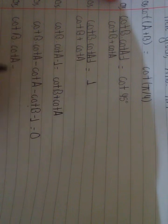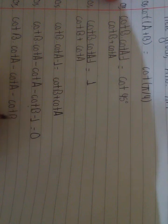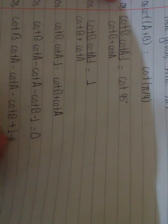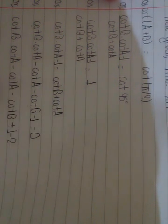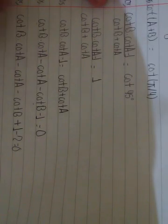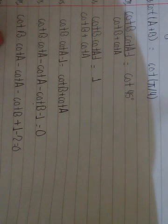We have cot(b) times cot(a) minus cot(a) minus cot(b), and instead of minus 1, we write plus 1 minus 2, which also equals minus 1. We write it this way because we need to prove that the expression equals 2.